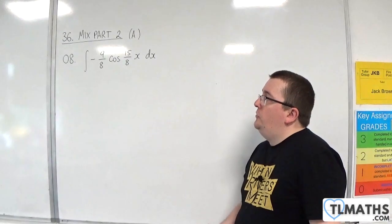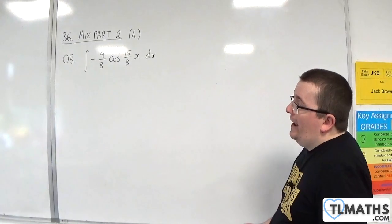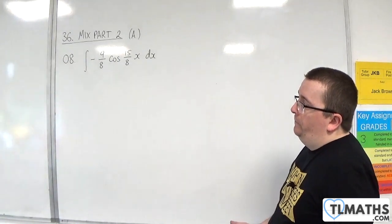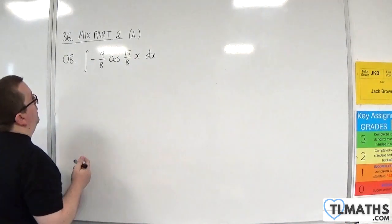So this is number 8. Integrate minus 9 eighths cosine of 15 eighths x with respect to x. So this is a standard function, nothing fancy going on here.